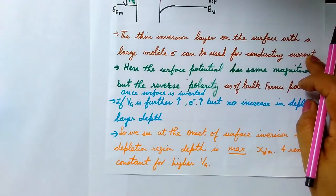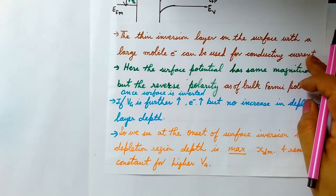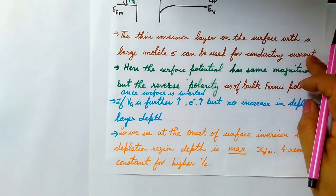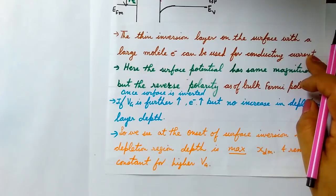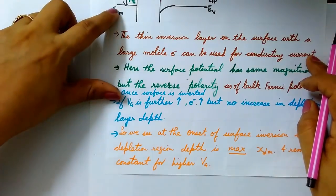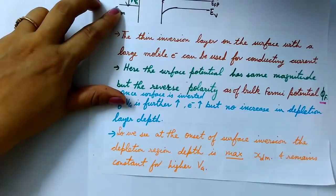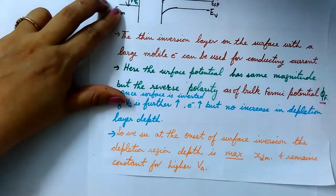Beyond the onset of inversion, further increasing VG increases the number of electrons in the inversion layer but the depletion layer depth does not increase further. We have now covered all three operating regions along with flat band voltage. In the next video we'll see how to calculate the depletion layer depth and its maximum value in the case of surface inversion. Thanks, and do subscribe to my channel and share with your friends.